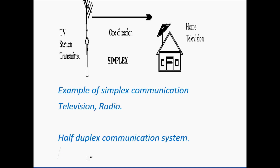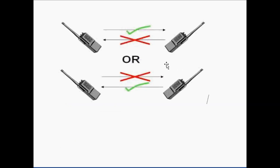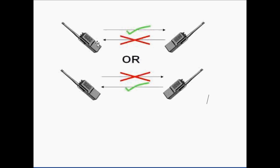See the diagram of the half duplex communication system. Suppose this is the transmitter and this device is the receiver. This device is transmitting data only and this device is receiving data. At that time, this device is not receiving — only transmitting.